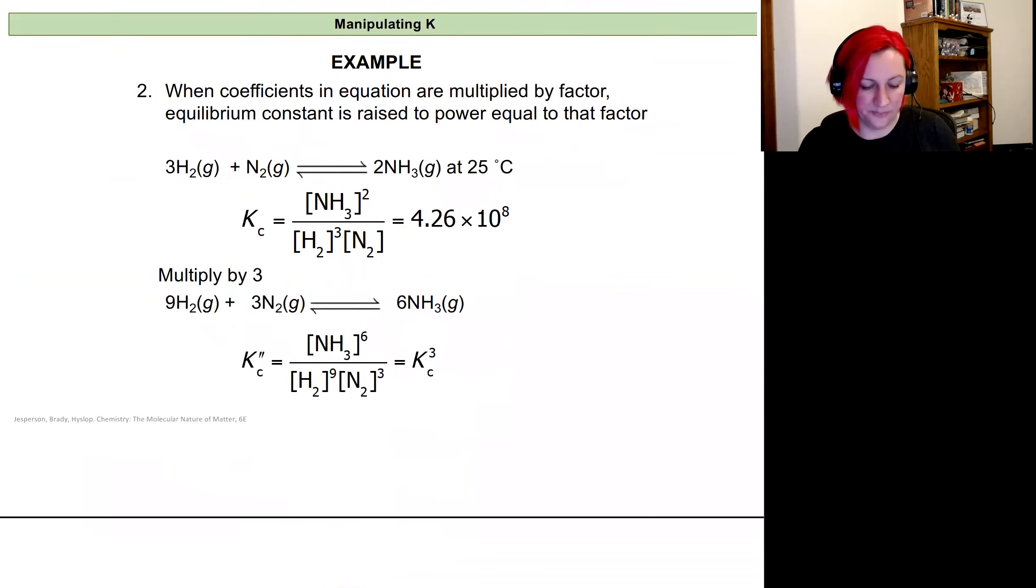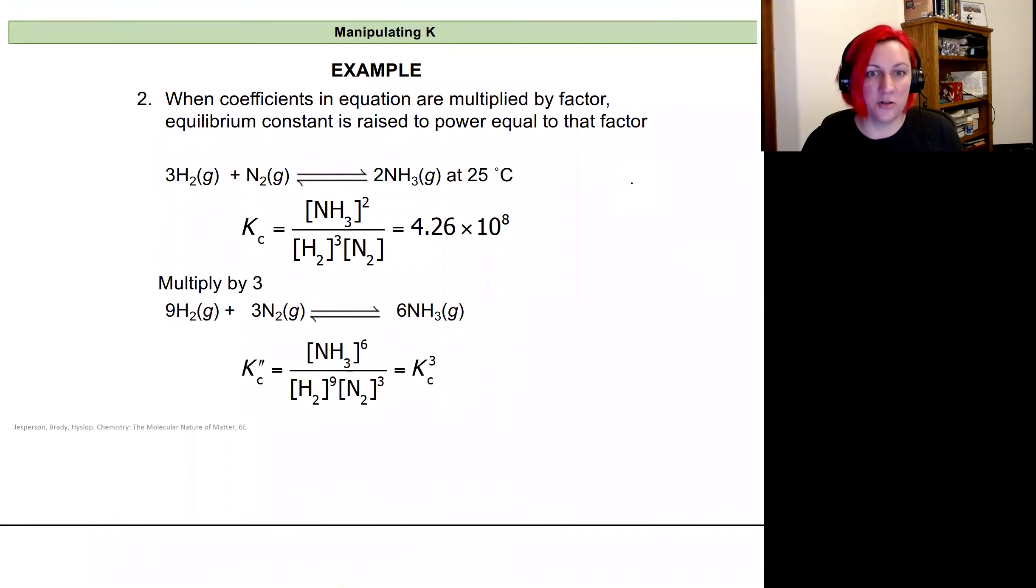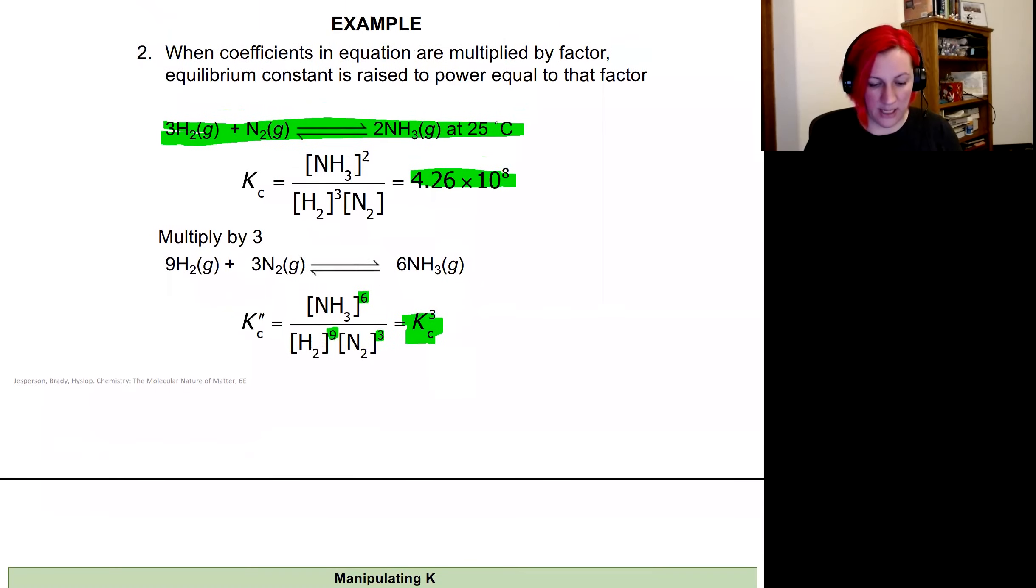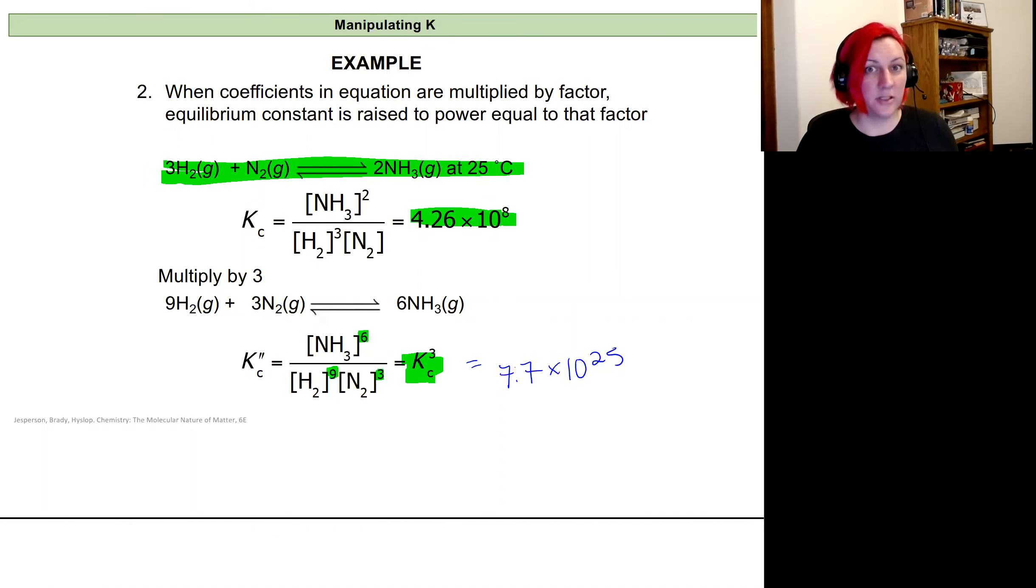Here's an example using our ammonium equation, hydrogen and nitrogen again. So if I multiply everything by 3, I take this Kc value for my reaction that I'm starting with. And if everything's multiplied by 3, I'll be changing this exponent of 2 to a 6, my exponent of 3 to a 9, and my exponent of 1 to a 3. And plugging that all in, I'm going to get a Kc value that is cubed of the one we just looked at. I'm going to get a value that's huge: 7.7 times 10 to the 25th.